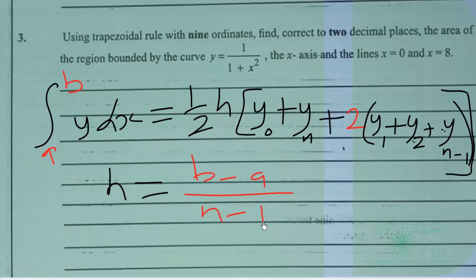This will be equal to b, which is 8, so we have 8 minus 0 all over 9 minus 1, and that will give us 8 over 8, which is equal to 1.